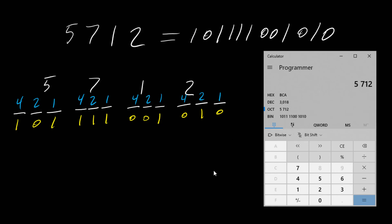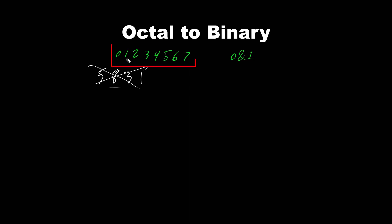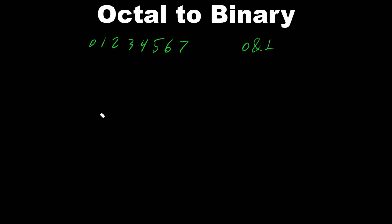Now let's take a look at another octal number. Let's say 5 8 3 1 1 — do we have 8 in the octal system? We don't, so this is not a valid octal number. Keep in mind octal numbers are 0 to 7. So let's use the octal number 3 1 6. The first step: separate them — 3, 1, 6 — and then assign 3 bits per octal digit.